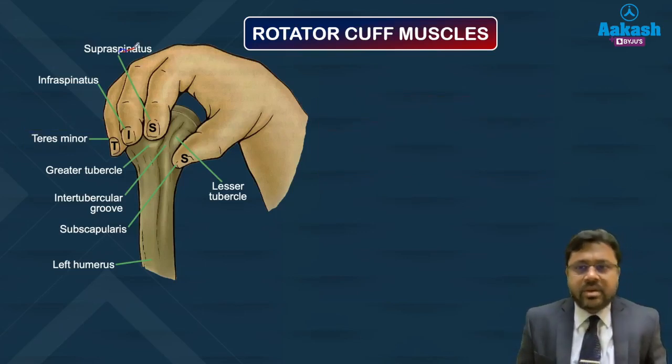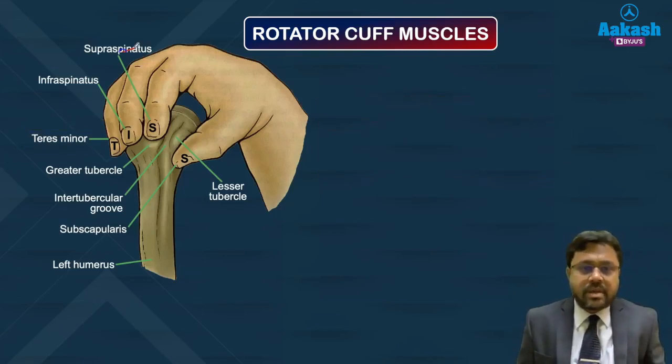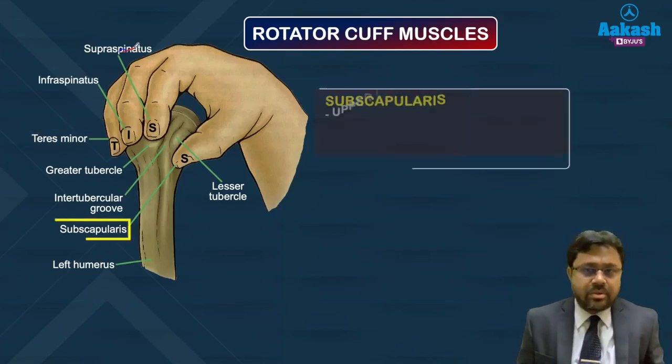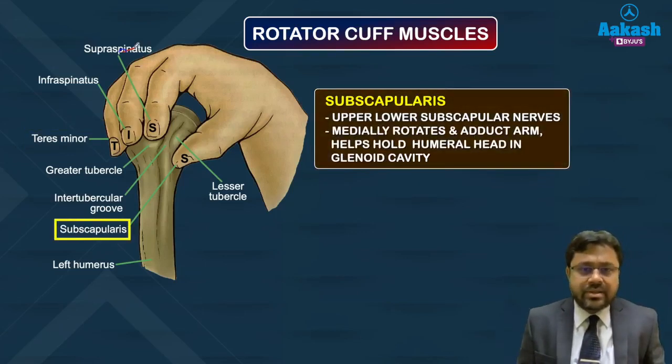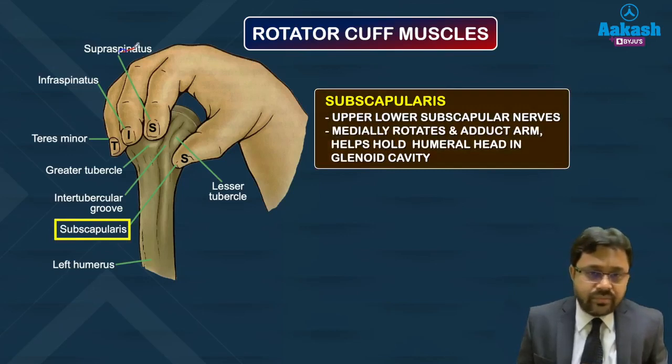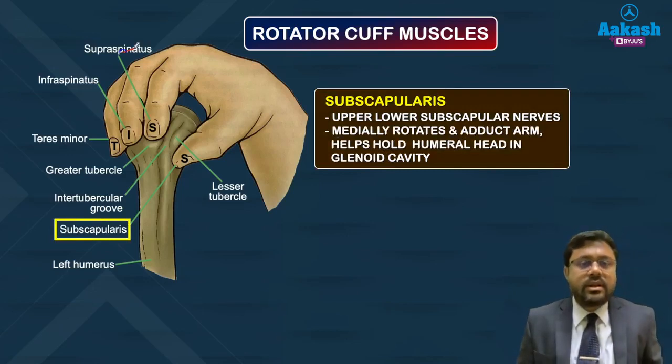Subscapularis is supplied by the upper and lower subscapular nerves. Its action is medial rotation and adduction of the arm, and it also helps hold the humeral head in the glenoid cavity of the scapula.